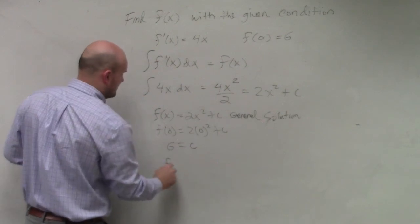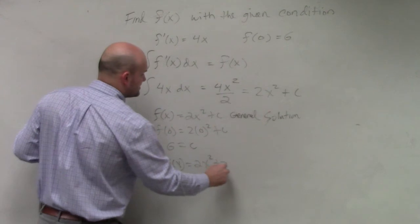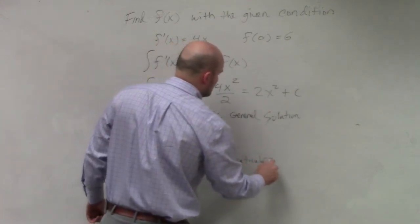So, now f of x equals 2x squared plus 6, which is my particular solution.